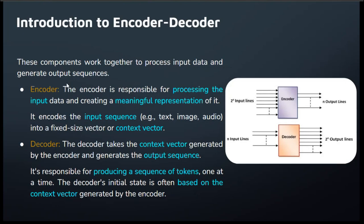The encoder takes the raw input data and gives it a makeover — it's like translating a sentence into a special code that captures the essence of the input. For example, imagine a sponge in a bowl of water absorbing every single drop. Similarly, the encoder takes each and every point of input and starts processing it. LLMs do the same — they absorb text messages, images, and audio — everything available for chatbots and large language models.